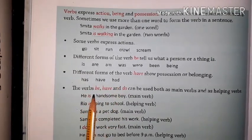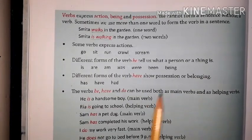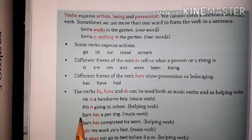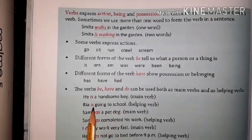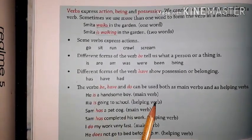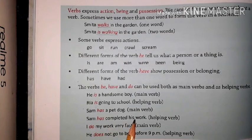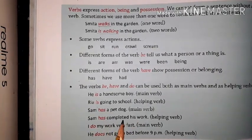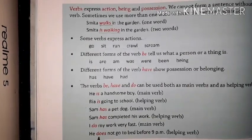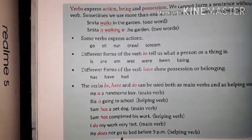Has, have, and had. The verbs be, have, and do can be used both as a main verb and a helping verb. For example: 'He is a handsome boy' — here 'is' is a main verb, but 'He is going' — 'is' is the helping verb and 'going' is the main verb. 'Sam has a pet dog' — here 'has' is a main verb. But 'Sam has completed his work' — 'has' is the helping verb and 'completed' is the main verb. 'I do my work very fast' — 'do' is the main verb. 'He does not go to bed before 9 p.m.' — here 'does' is the helping verb and 'go' is the main verb.